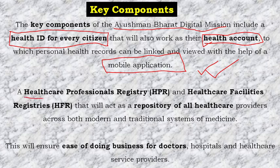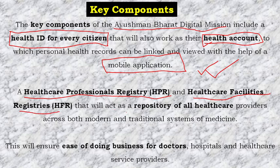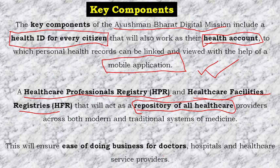Two institutions will be created to oversee this. The first institution names to remember are: Healthcare Professional Registry (HPR) and Healthcare Facility Registry (HFR). These will keep all health records in one place — covering both modern and traditional systems of medicine. Modern means allopathic, and traditional means Unani, Homeopathy, Ayush, Ayurveda — all these are included.